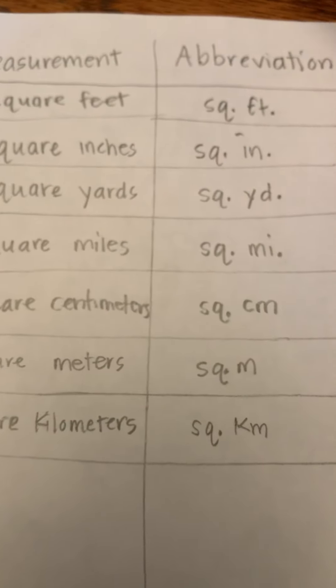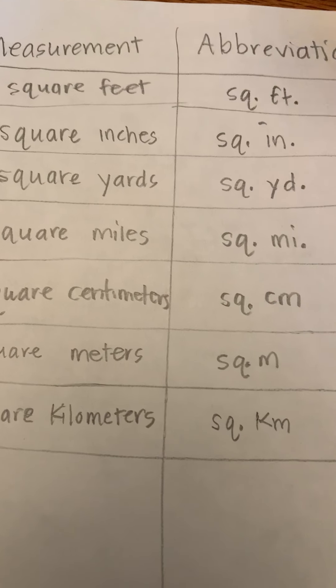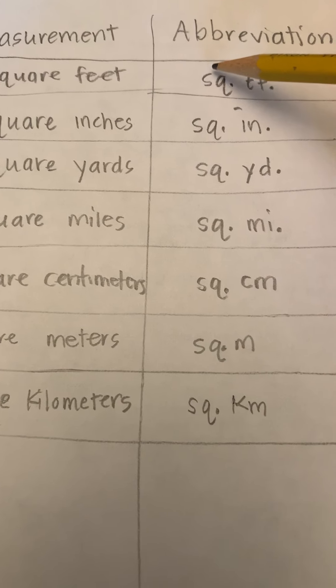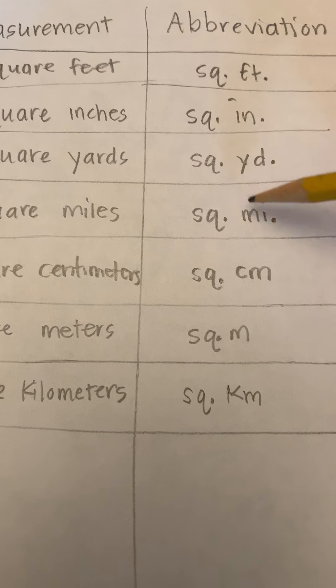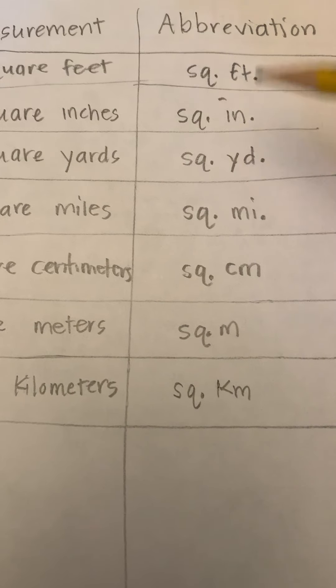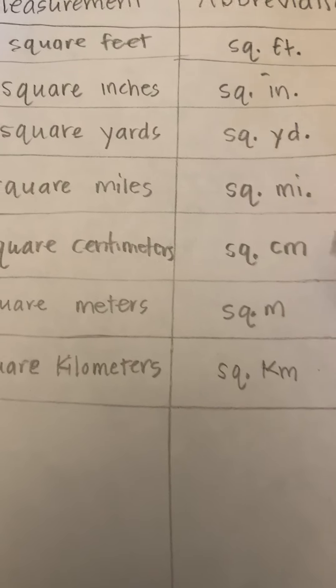So, square feet: SQ period, FT period. And you'll notice after SQ there's always a period. And all of these there's a period, until you get to centimeters, meters, and kilometers - no periods.